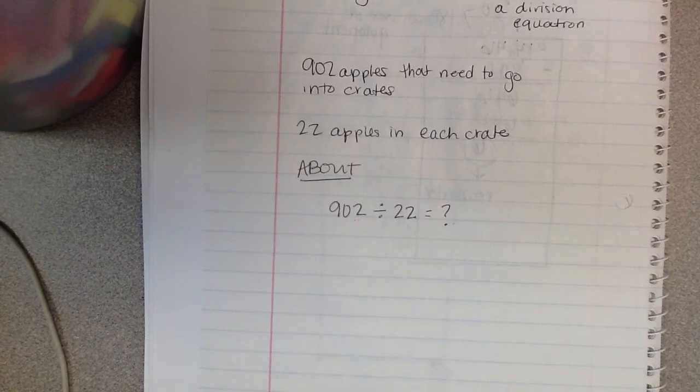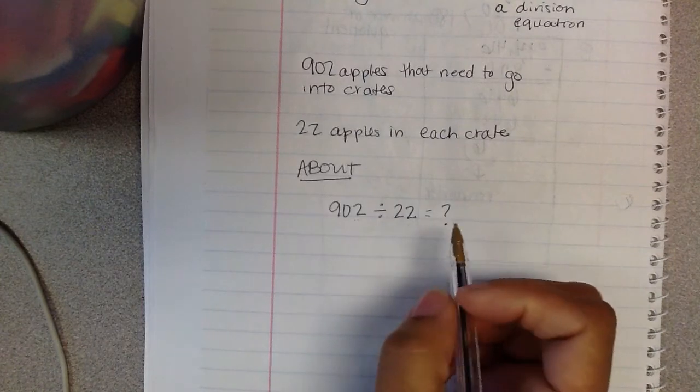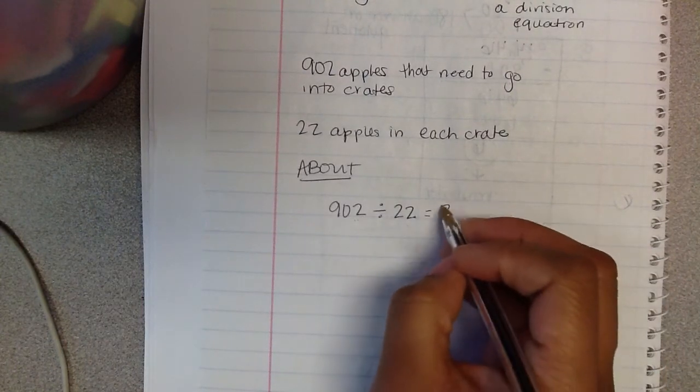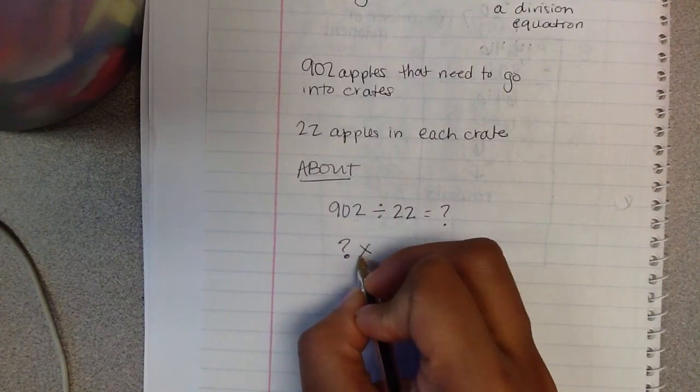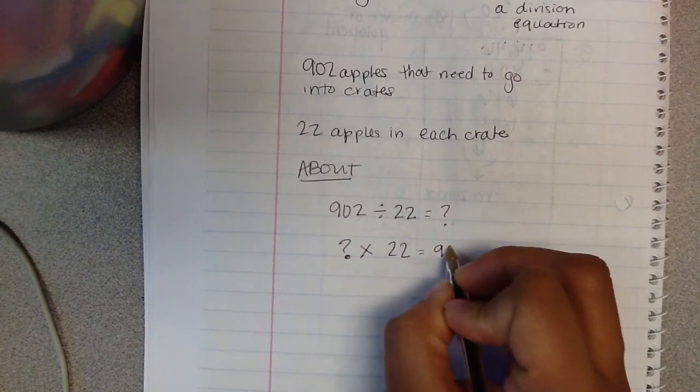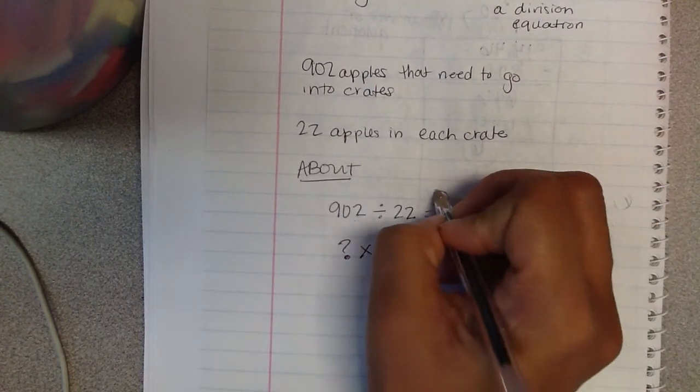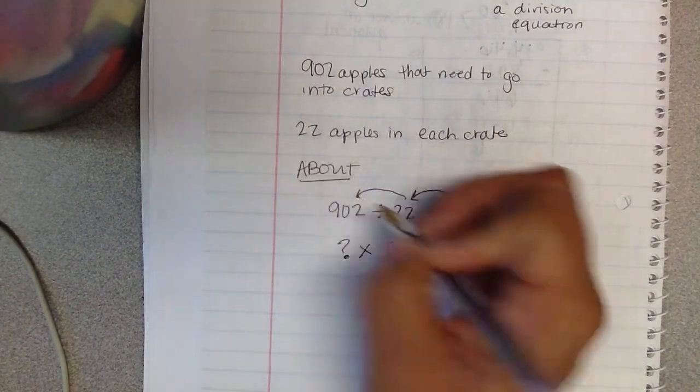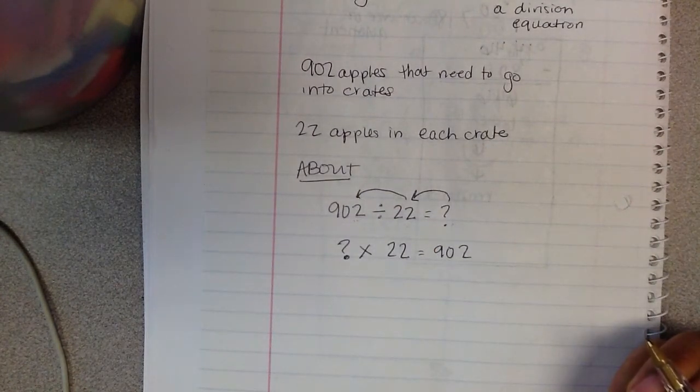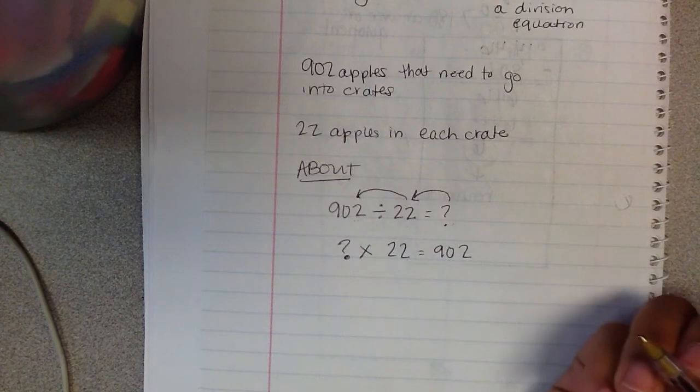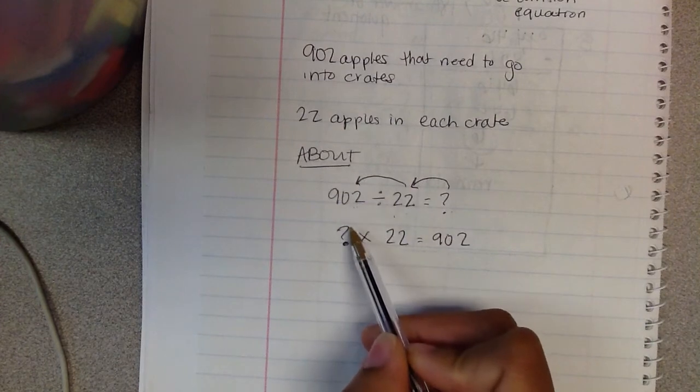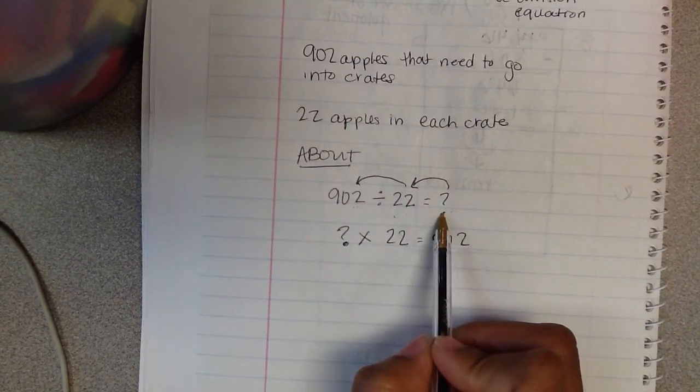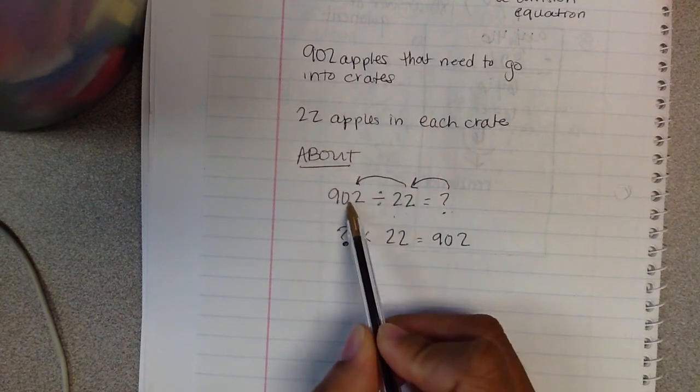So when I'm solving this problem, since it wants to know about, I know if I think backwards, if I'm thinking of this number, of this number backwards, I know that I'm thinking of something times 22 equals 902. That's this equation backwards. Division, if you think about it like this, is always multiplication backwards. And multiplication is always division backwards. So I'm thinking of whatever my answer is, I should be able to multiply it by 22 and get 902 apples. Because remember, this is the number of groups. This is how many is in each group. And then this is my total.